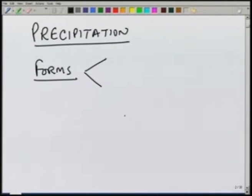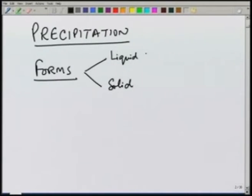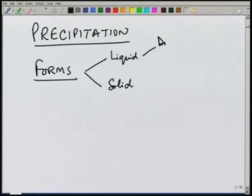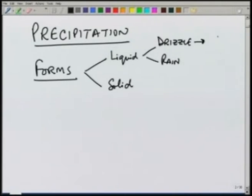In the first classification, we can classify the precipitation which is falling as a liquid form or a solid form. In the liquid form, of course, we have rain, but depending on what is the rate at which it is falling, we can classify this into different categories. For example, a drizzle or rain, depending on what is the intensity at which they are falling. A drizzle has an intensity which is very small — typically less than about 1 millimeter per hour.